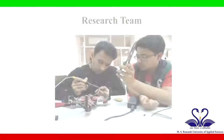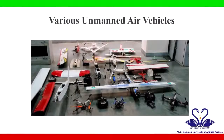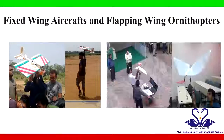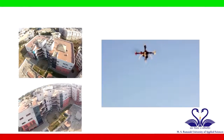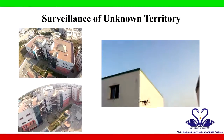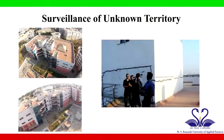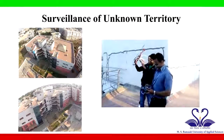Apart from the micro quadcopter, the research team at MSR UAS was involved in the development of various other unmanned air vehicles such as fixed-wing aircrafts and flapping-wing ornithopters. This product developed at MSR UAS can give a significant thrust to the surveillance process of unknown territory or buildings where human intervention can pose a serious threat to life.